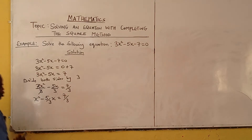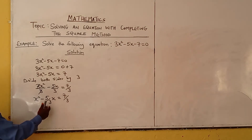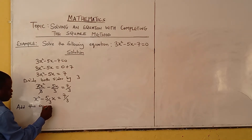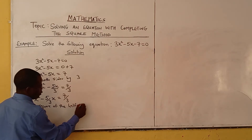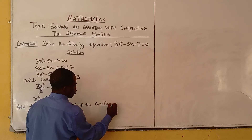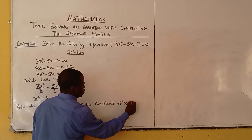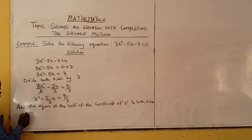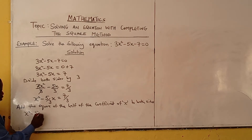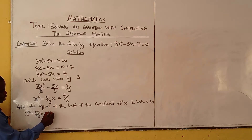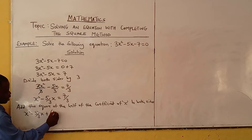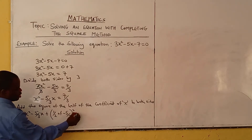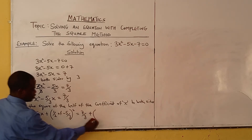Now what we need to do is add the square of the half of the coefficient of x to both sides. What is the half of the coefficient? Just write it like this: x² minus 5/3 x, plus the square of half of the coefficient of x — that is, half of minus 5/3, squared — added to both sides. So we have: x² minus 5/3 x plus (½ × −5/3)² equals 7/3 plus (½ × −5/3)².